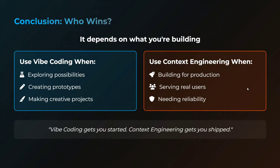In conclusion, who wins? They are a little intermingled. Use vibe coding for exploring possibilities, creating prototypes, and making creative projects. Use context engineering for building for production, serving real users, and needing reliability — when you actually have some context. Vibe coding gets you started; context engineering gets you shipped. That's the apt line. I hope you try both approaches — let me know in the comments how you feel about it, and see you soon. Thank you!